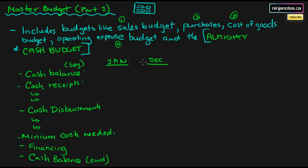Essentially, we have a few months — it's going to be like a continuous budget with months like December, January, February, and so on. What's going to happen is we just note the initial cash balance, and that's how we start off.